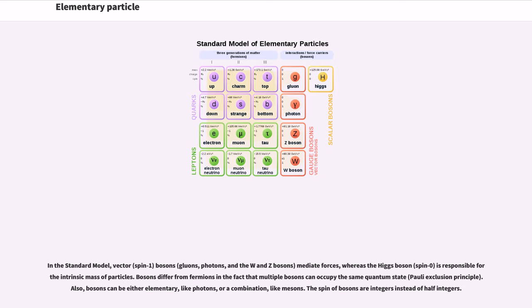In the standard model, vector (spin-1) bosons—gluons, photons, and the W and Z bosons—mediate forces, whereas the Higgs boson (spin-0) is responsible for the intrinsic mass of particles.